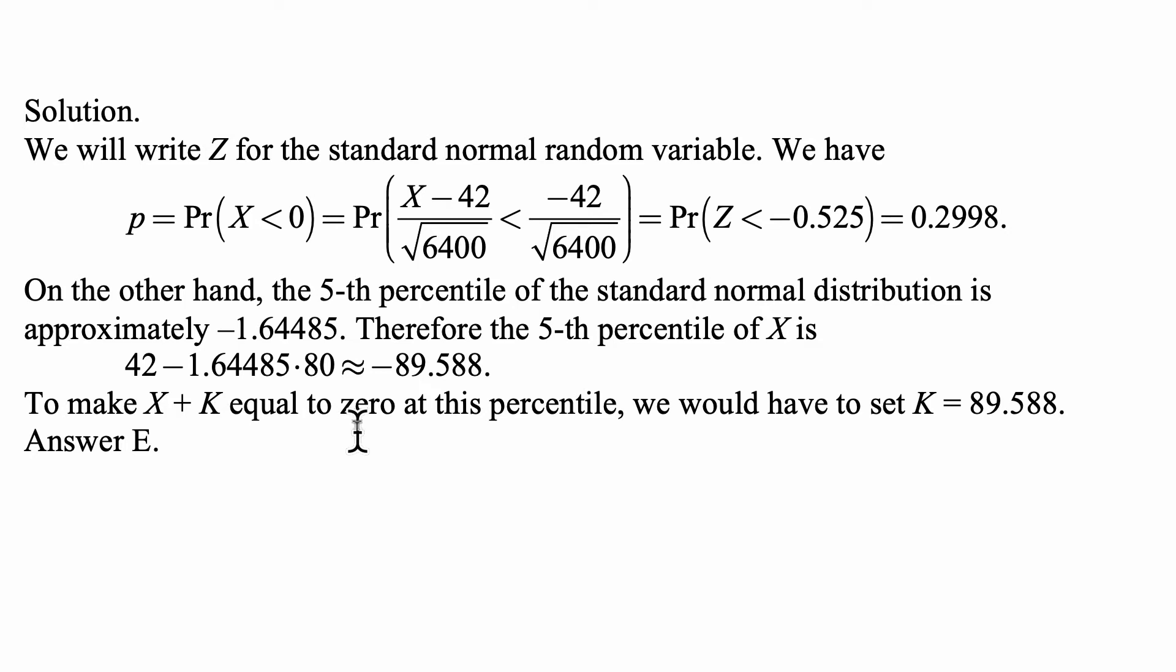To make X plus K equal to zero at this percentile, we would have to set K equal to 89.588. And that's answer E.